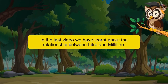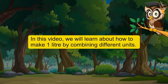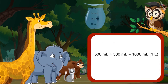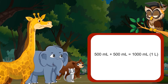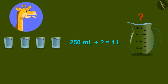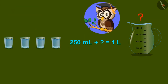In this video, we will learn about how to make one litre by combining different units. Do you know mixing 500 ml twice gives one litre? Yes, sir. Are there any other units which on adding gives one litre? Sir, ask a bit more clearly — I couldn't understand. For example, do you think that glasses of 250 ml can be combined to form one litre? Yes, it can be made. One litre can be made out of 250 ml. Let's see how 250 ml and other units can be combined to form a litre.